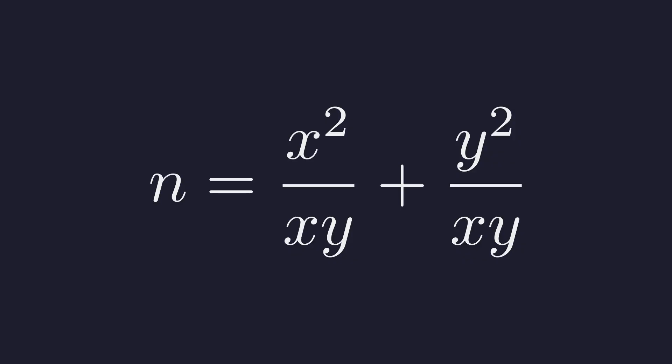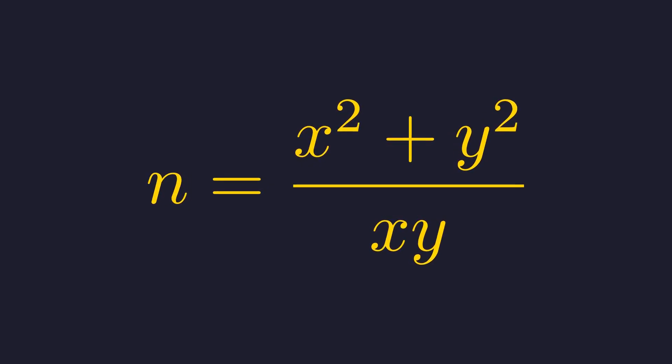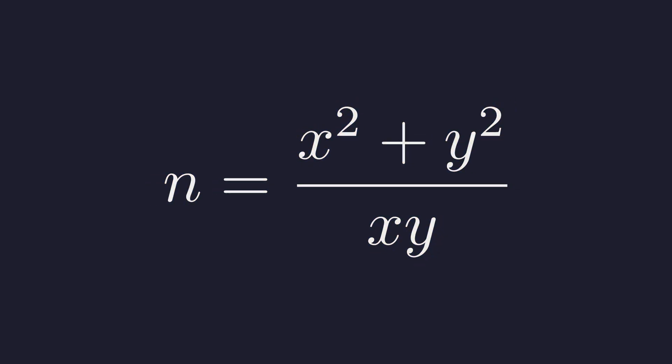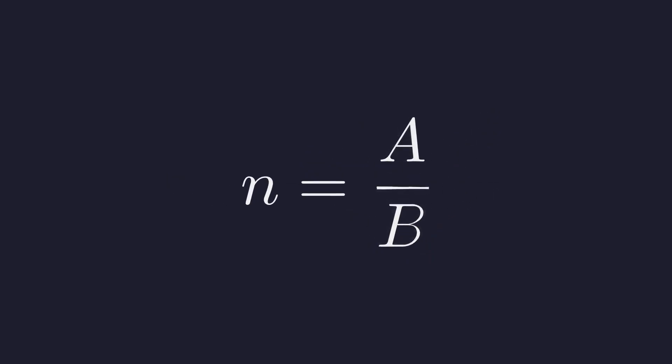This gives us x squared over xy plus y squared over xy. Combining the numerators. And look at that. The numerator is exactly A. And the denominator is exactly B. So n is just A over B.